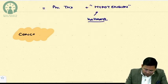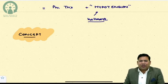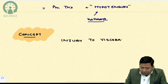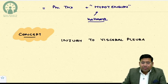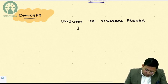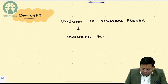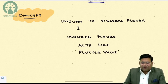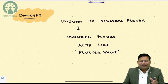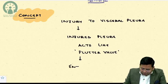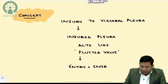Now let's understand the concept. There are two pleurae — visceral and parietal. When there is injury to the visceral pleura, the injured part acts like a flutter valve. A flutter valve allows only unidirectional flow — it does not allow reverse flow. So this leads to entry of air into the pleural cavity, but not its exit.